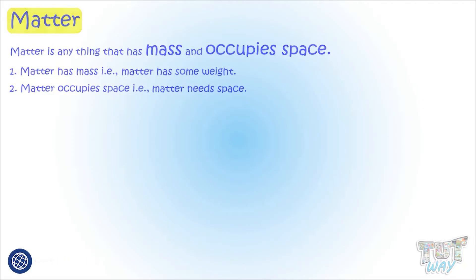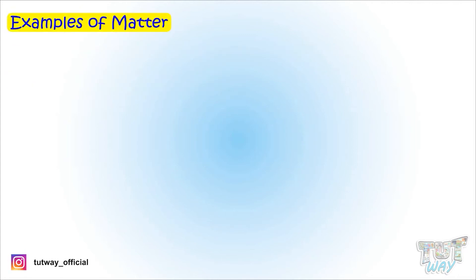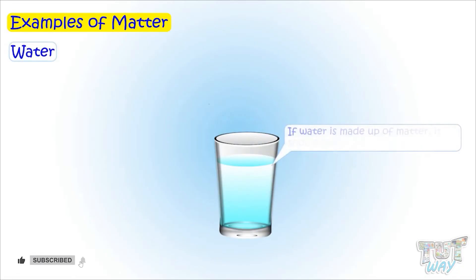Let's take an example to prove it. We learned that everything is made up of matter. So let's take a few things and see are they made up of matter. First is water. We have to see if water is made up of matter. It should have mass and occupy space.